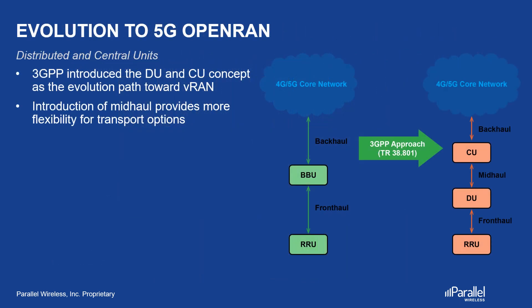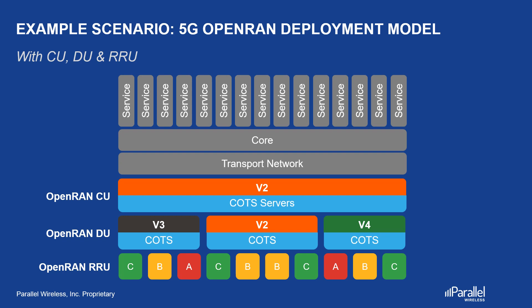Now, when we move on to 5G, instead of a BBU we have a central unit or CU and a distributed unit or DU. While the backhaul and fronthaul remain the same, mid-haul has been introduced to connect CU and DU. The same approach to multiple vendors being able to interoperate with each other continues in 5G due to the Open RAN approach. As you can see, the DU and CU vendors do not have to be the same, and the DU vendors should be able to work with the same RRH vendors because of open-specified interfaces.